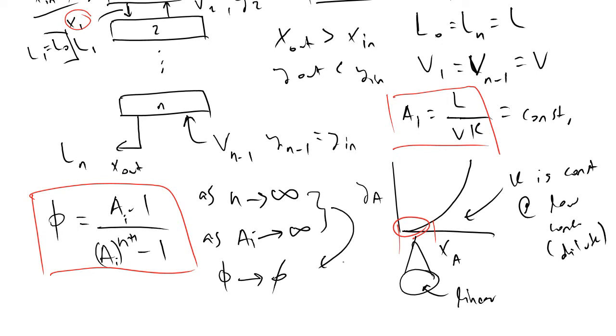And this should make intuitive sense. So as we are increasing the number of trays, if we had an infinite number of trays, we would expect to absorb everything, as well as if we had, let's say one tray, and we increased the solvent flow rate to infinity, we would also expect to extract everything.